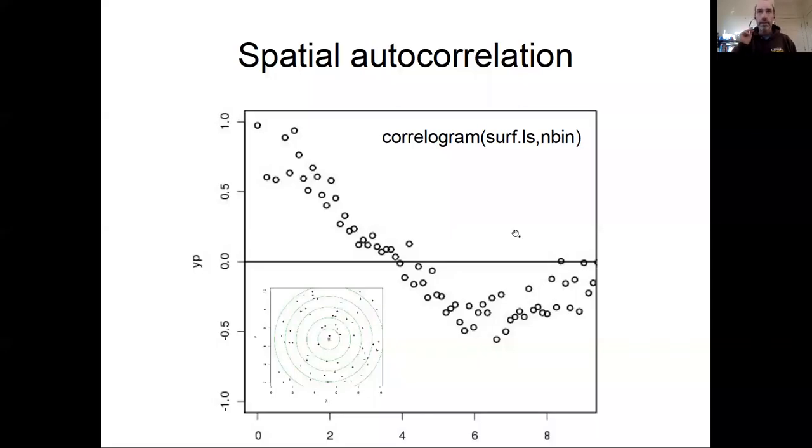In this section on spatial exploratory data analysis, I want to talk about spatial autocorrelation and spatial covariance. If we continue with the example we've been discussing where we had a surface, points with attributes associated with them, and we first started by fitting this surface.